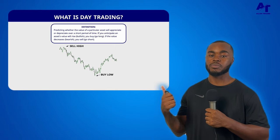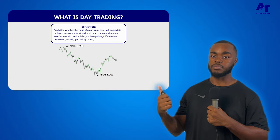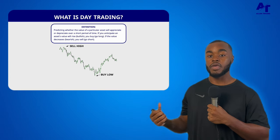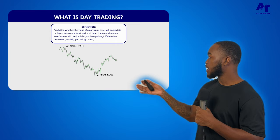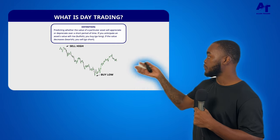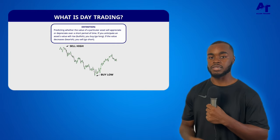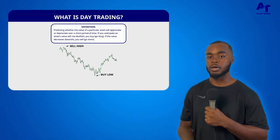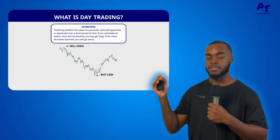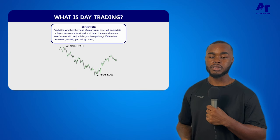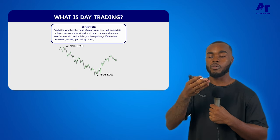If price is going up, that means you're bullish. If you think price is going to go down, then that means you're bearish. If we look at the picture in the middle, you can see two signs that say sell high and buy low. That is the essence of day trading — we want to sell at the highs, ride it all the way down, and then buy at the lows and ride it all the way up.